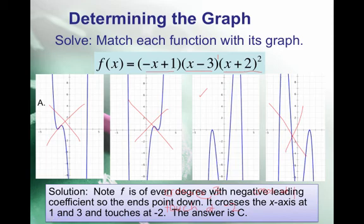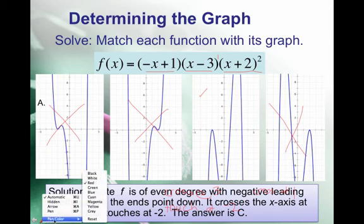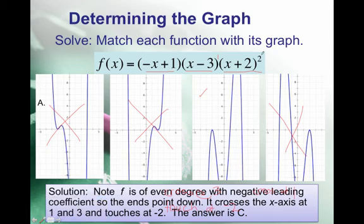We know f is of even degree with a negative leading coefficient, so both ends point down. To find the degree, just add the exponents: 1 plus 1 plus 2 gives 4, so the highest degree is 4. And the signs on the x terms — positive, positive, negative — multiply to negative, confirming the leading term is negative.